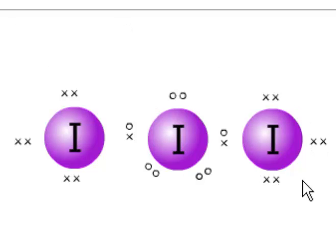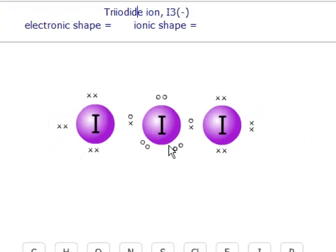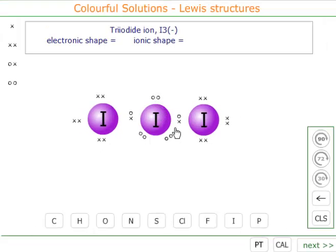Now we need to decide what the arrangement of electrons is around the central iodine. Well, there are 5 pairs of electrons—3 lone pairs and 2 bonding pairs.